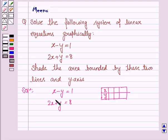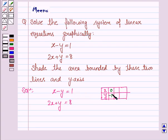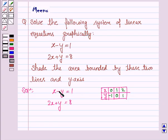We'll give different values to x and y and see through which points the graph passes. If x is 0, then y is minus 1, because the equation becomes 0 minus y is equal to 1, that is y is equal to minus 1. If y is 0, then x is 1, because the equation becomes x minus 0 is equal to 1, that is x is equal to 1. And if y is 1, then x is equal to 2, because the equation becomes x minus 1 is equal to 1, so x is equal to 1 plus 1, that is 2.